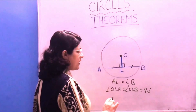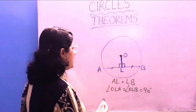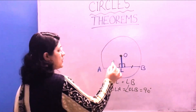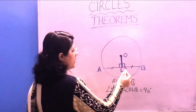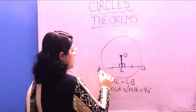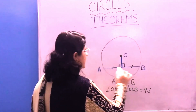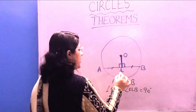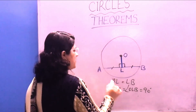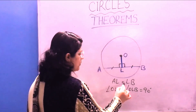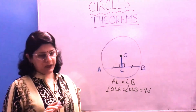Vice versa: if in a question this line is perpendicular to the chord, then point L is bisecting the chord. It means L is the midpoint of chord AB, so AL is equal to LB. This is our first theorem.